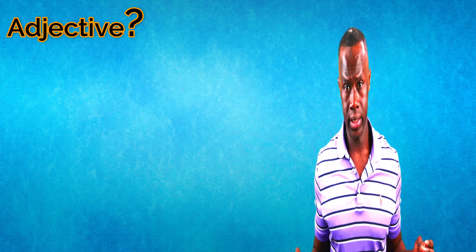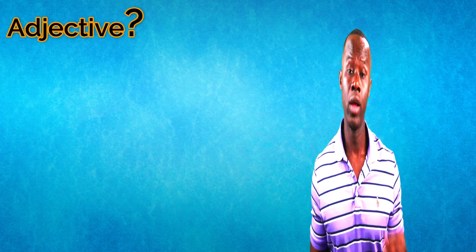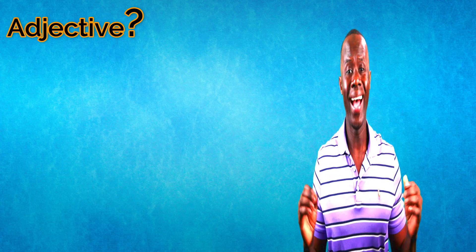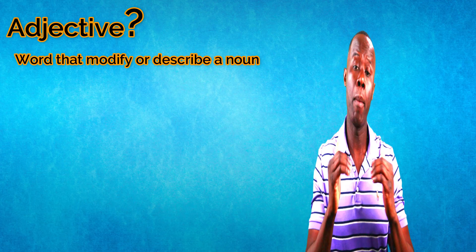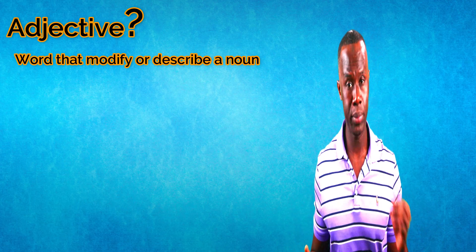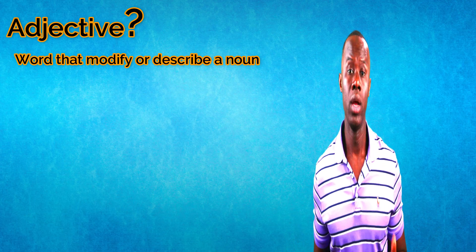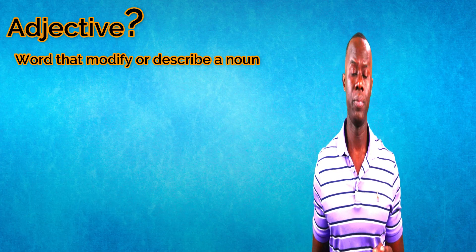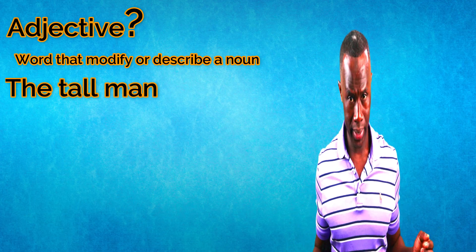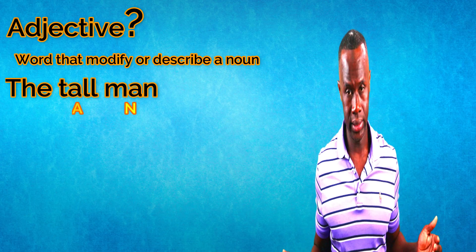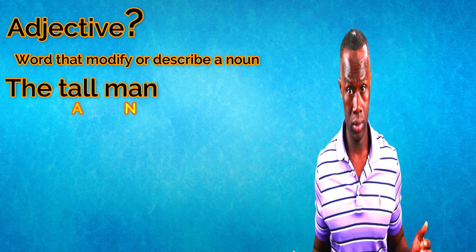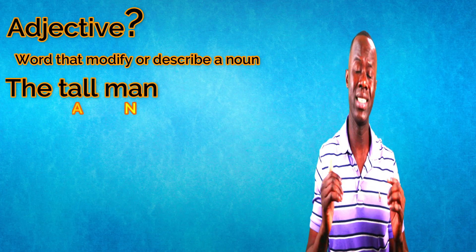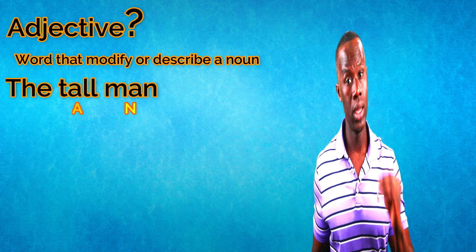But first, what is an adjective and what does it do? Well, an adjective is a word that modifies or describes a noun. For example, 'the tall man' — tall is the adjective and man is the noun, and tall is describing the man.